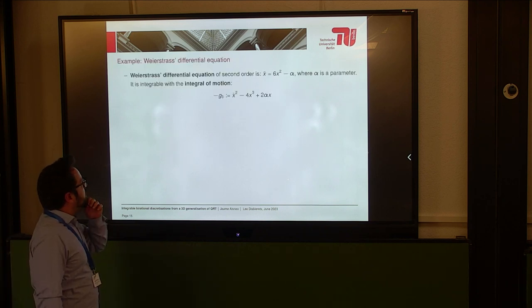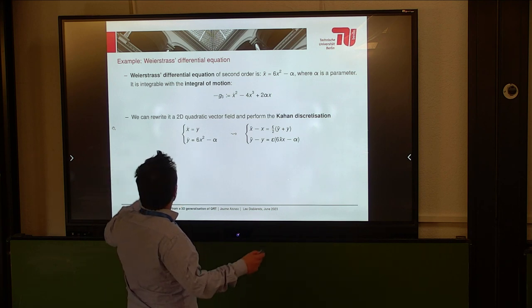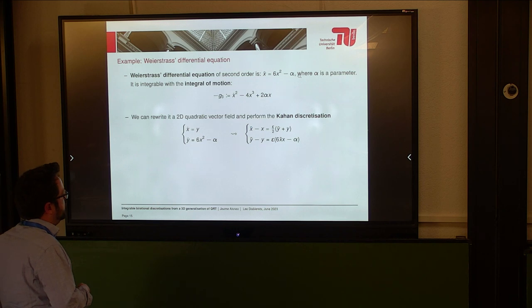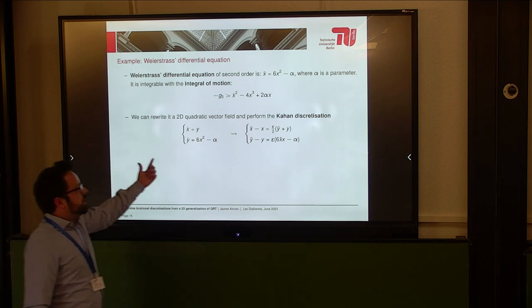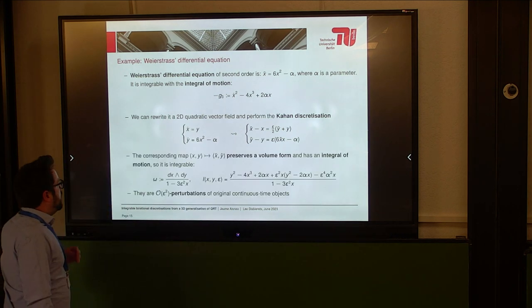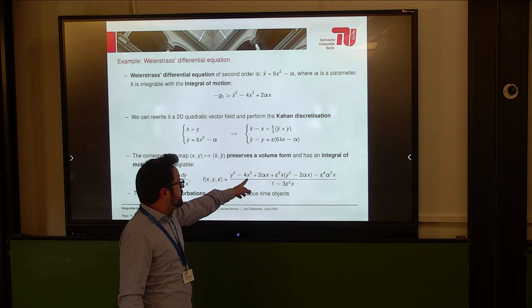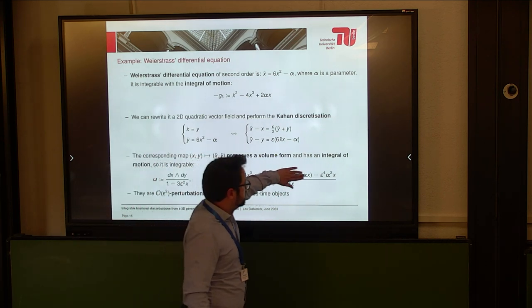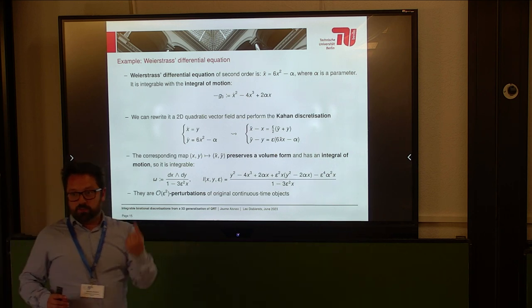I take the Weierstrass differential equation, which is very simple and integrable — an equation of second degree. I can re-write it in two dimensions and first order, and then apply this discretization. It has very nice properties: it does conserve a volume form, it has an integral of motion, and both objects, when epsilon becomes zero, recover the original object. So this is a canonical example that works very well — at least we have one method that, in one example, works well. This is what typically happens: with the LR method, even with a small time step, you start spiraling; with the Kahan discretization, even with a bigger time step, it preserves the original shape.